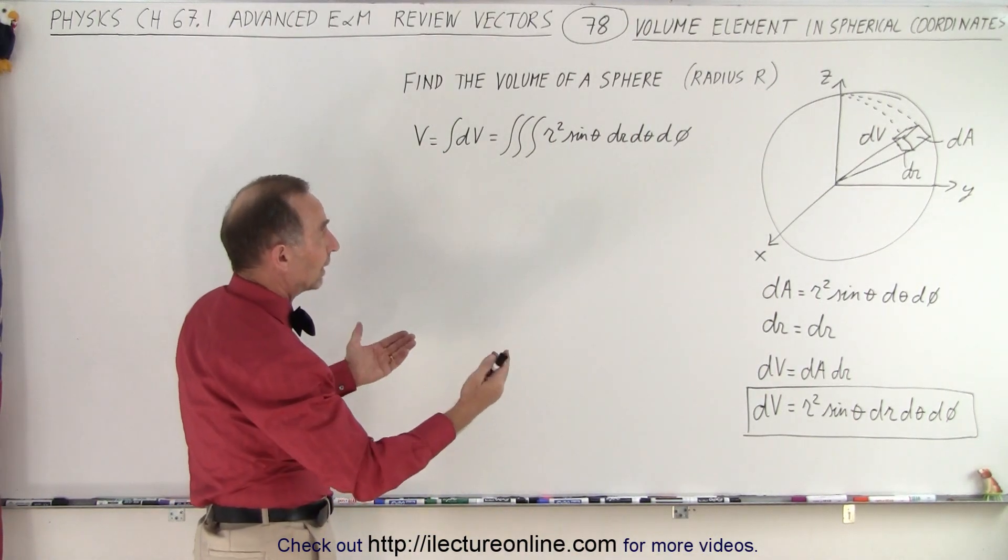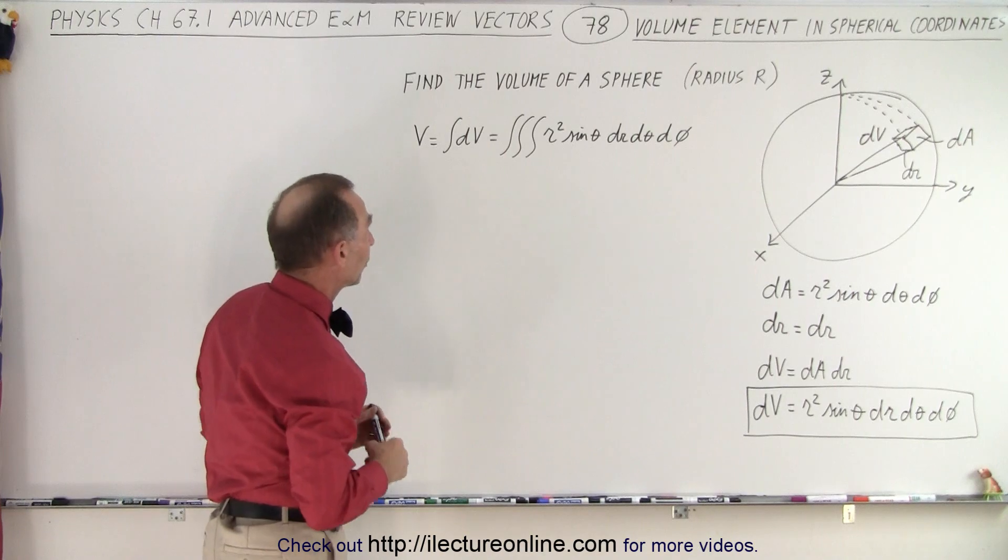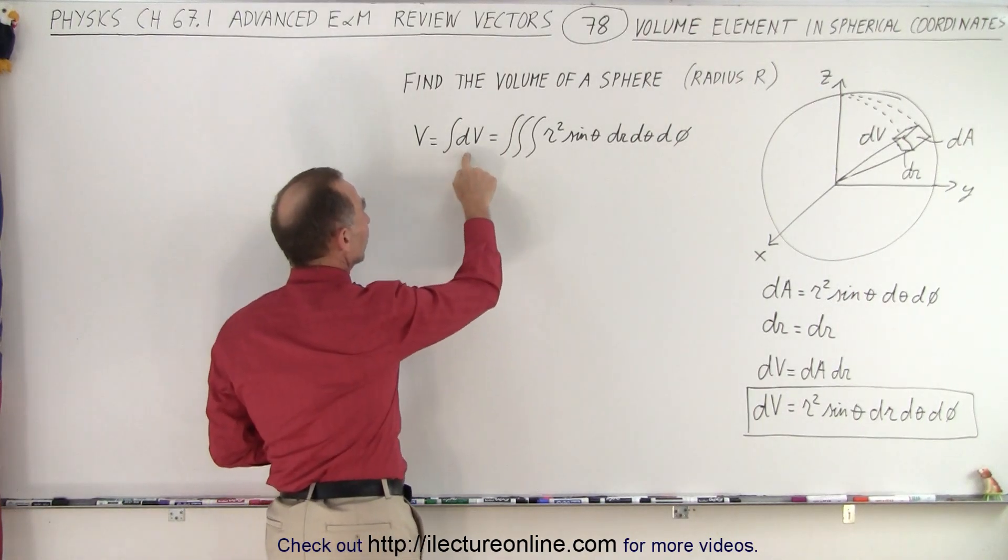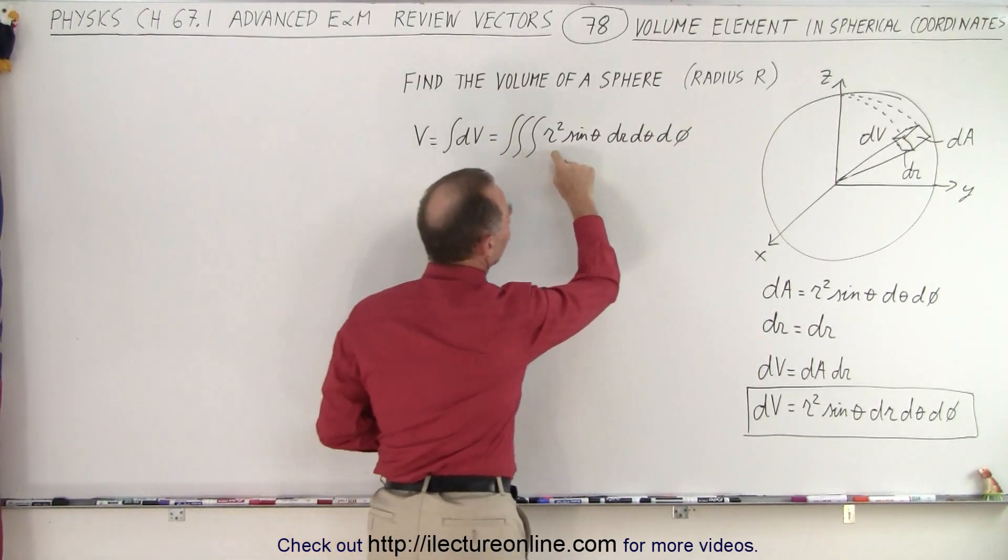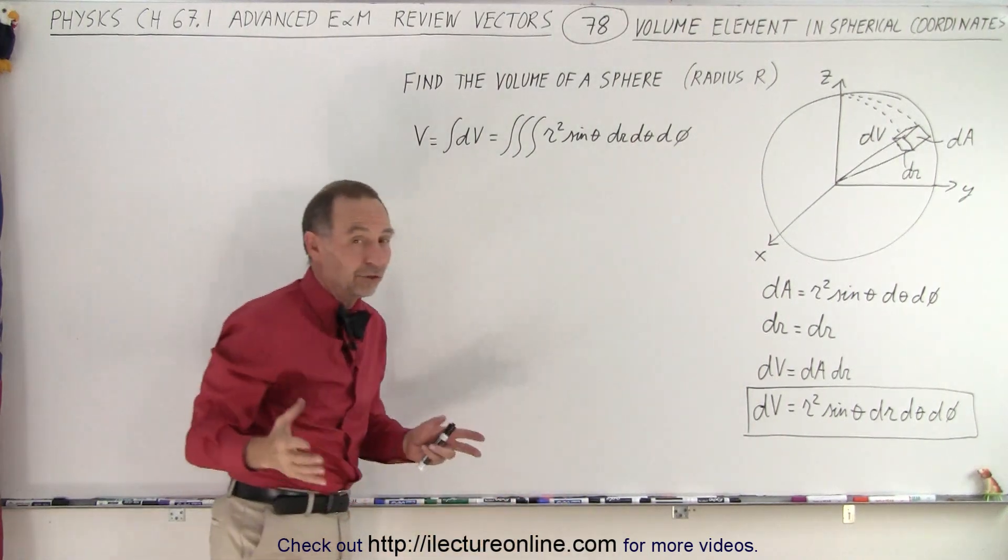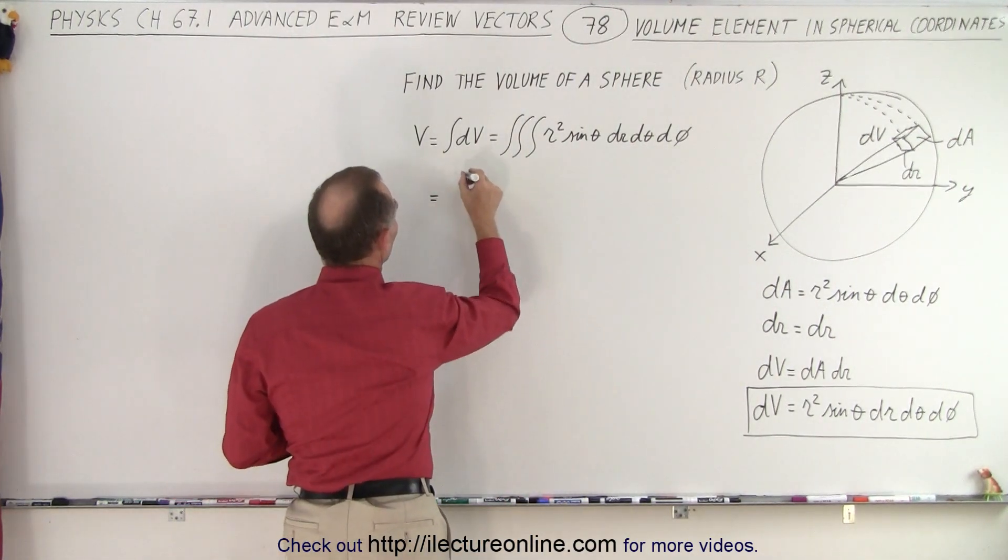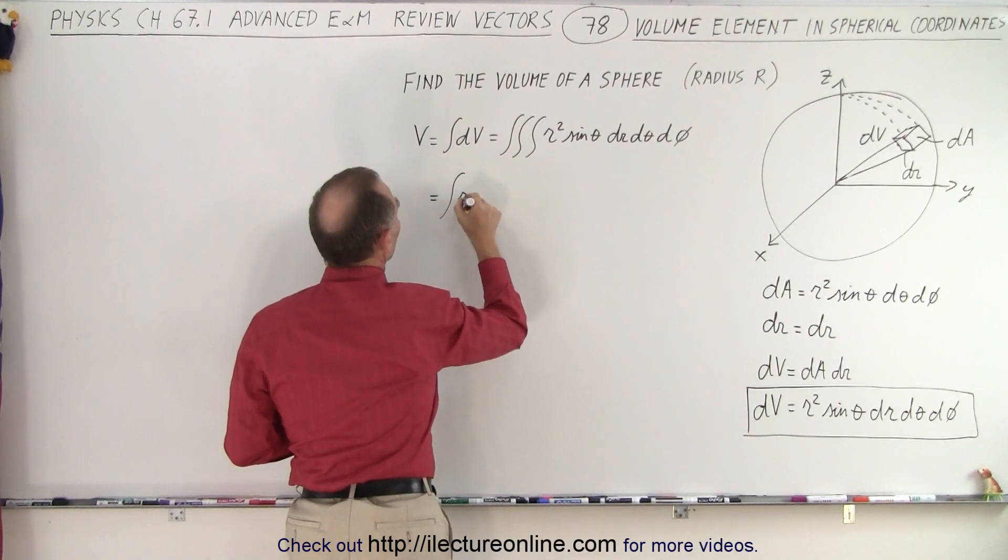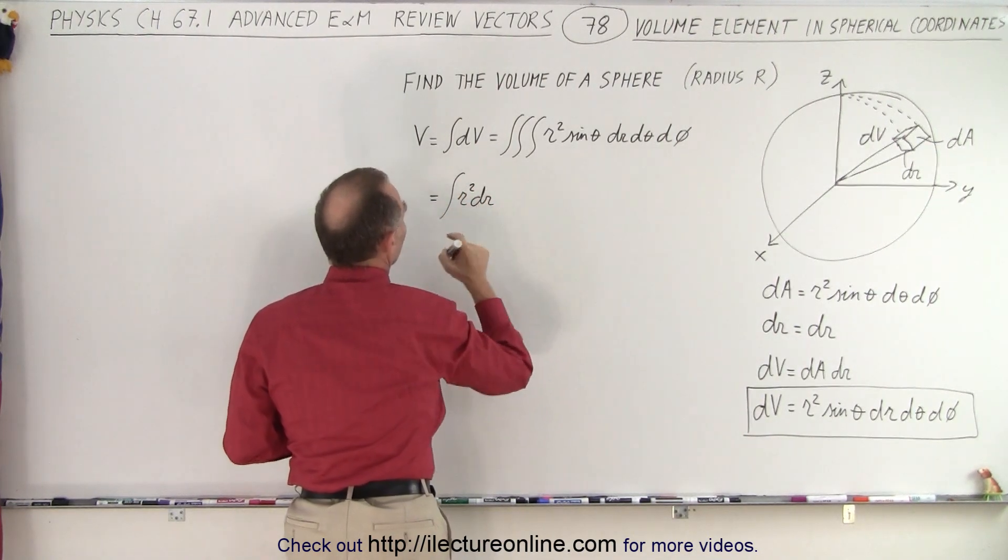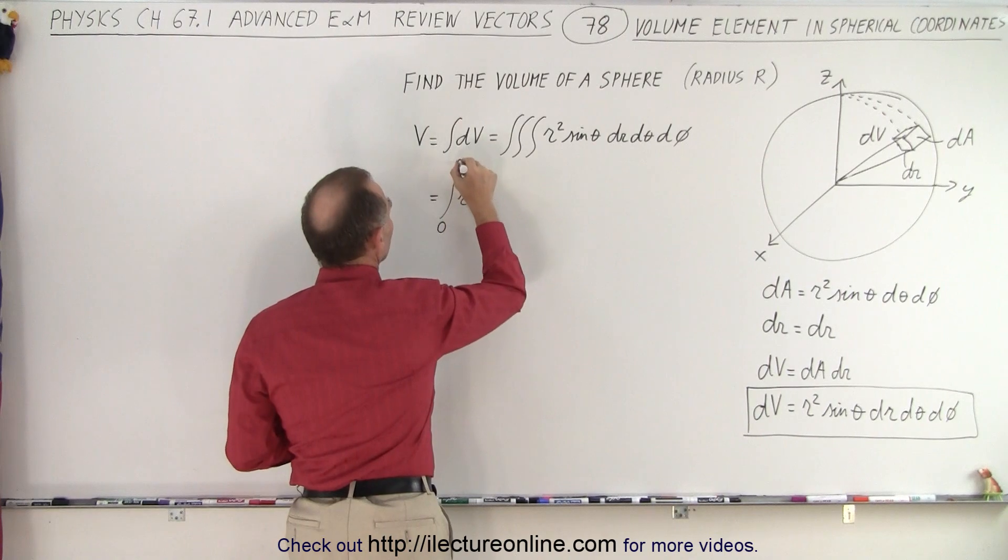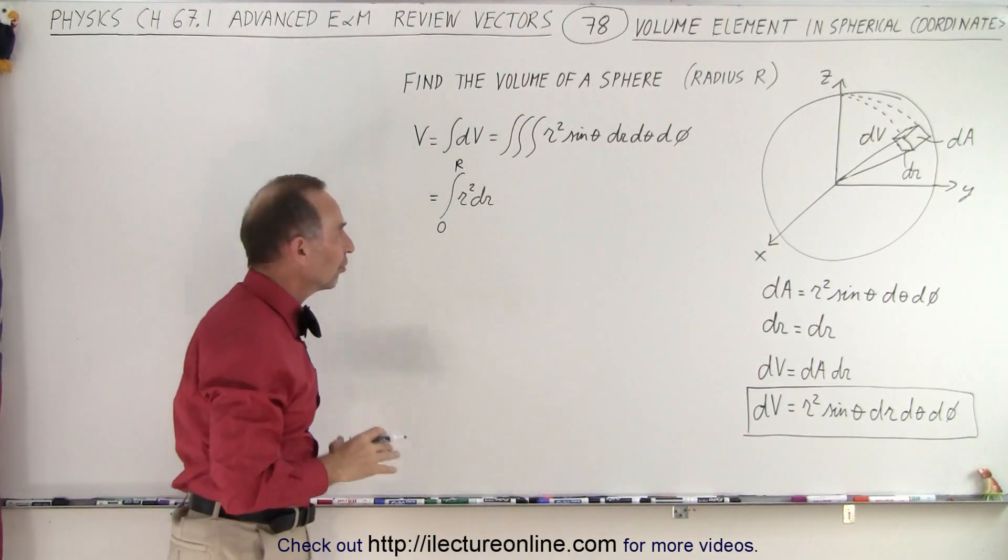We're going to simply calculate the volume of the sphere in spherical coordinates which essentially is V is the integral of dV and dV now you can see is defined as this. So we have to do a triple integral. And so we're going to write this as follows. So this integral of r squared dr and that's going to be from zero to the edge of the sphere which is radius R.